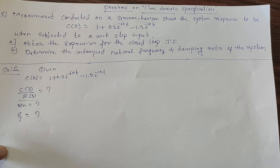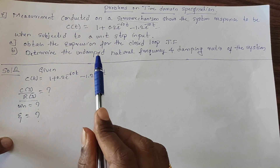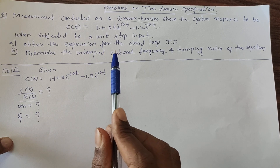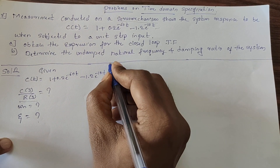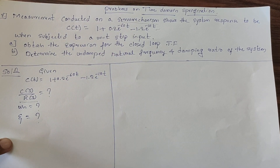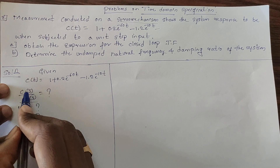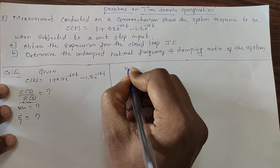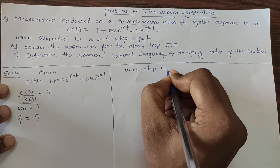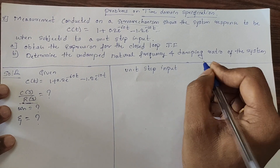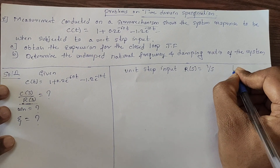The given data is the system response c(t) = 1 + 0.2 × e^(−60t) − 1.2 × e^(−10t). To find C(s)/R(s), note that R(s) is given as a unit step input: R(t) = u(t), and taking the Laplace transform gives R(s) = 1/s.